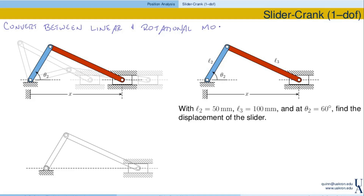One of the most common examples of slider cranks can be found in your car engine. You could think about this slider as representing the piston in your engine. A combustion process occurs, force is applied, and it drives this piston to the left, and as a result ends up rotating this blue link, which could be connected to the drive shaft of your car. So basically that slider crank mechanism converts the linear motion produced by the piston and the combustion process into rotational motion, which ultimately makes the wheels go round and round.